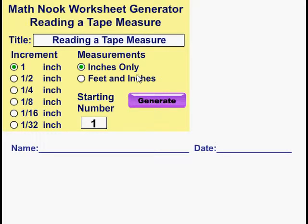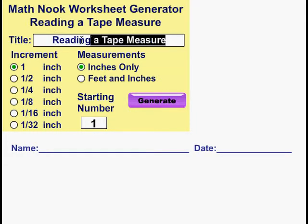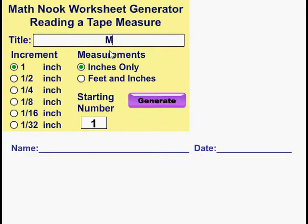Okay, getting to the tutorial. This is what you'll first see when you bring up the generator. The first field here is a title field, and this is what will print out on the worksheet. If you're not happy with that, you can always change it.